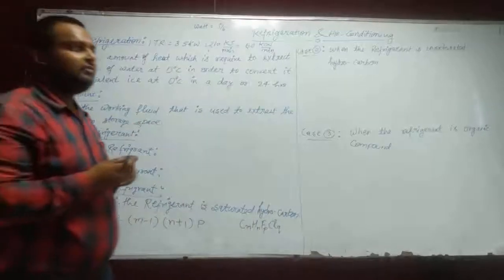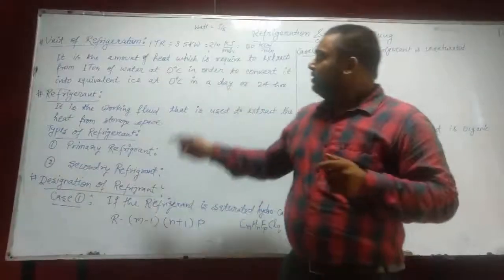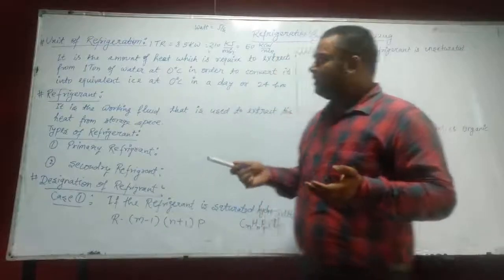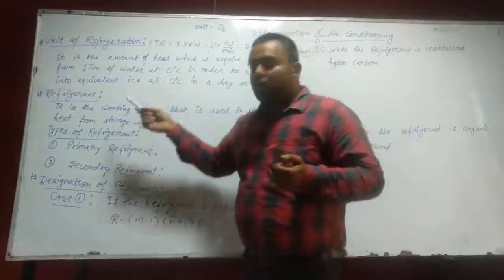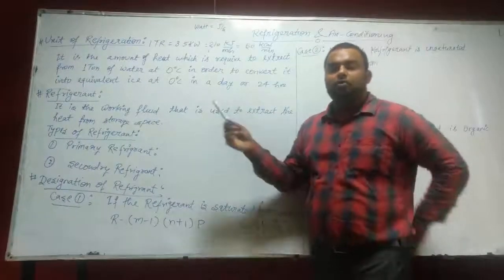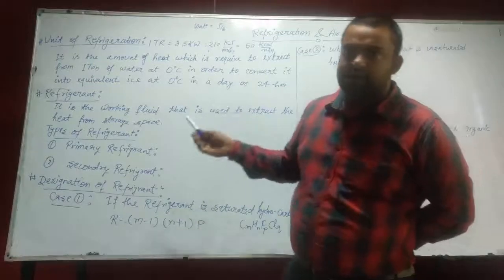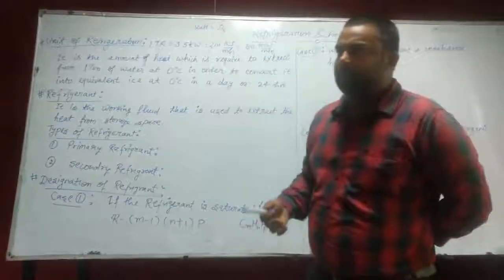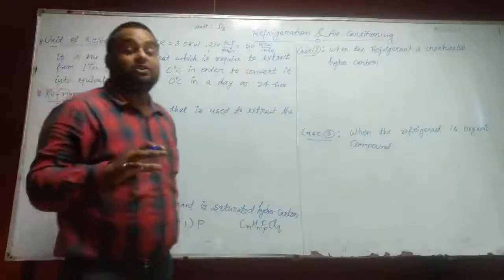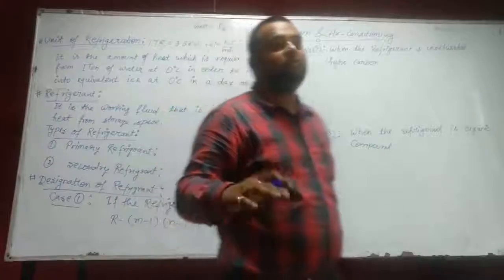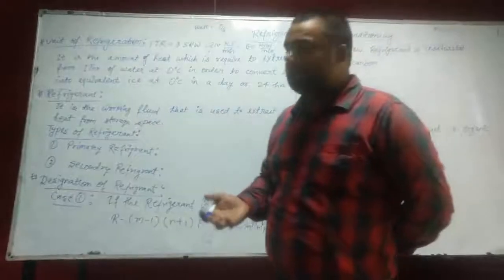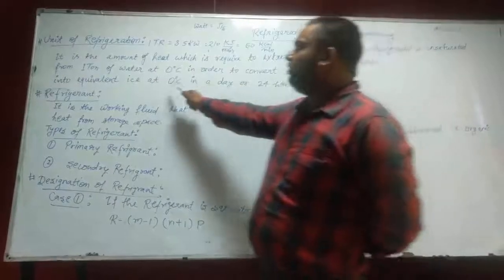How we get the unit of refrigeration? It is the amount of heat which is required to accept from 1 ton of water at 0 degree centigrade in order to convert it into ice at 0 degree centigrade in 24 hours or in a day. This is the unit of refrigeration.